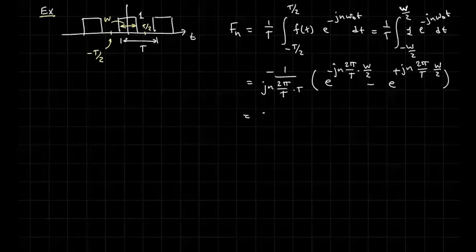We'll have minus 1 over N pi times E to the, actually I'll put a plus there, and then we'll go E to the plus Jn pi over T minus E to the minus Jn pi over T.